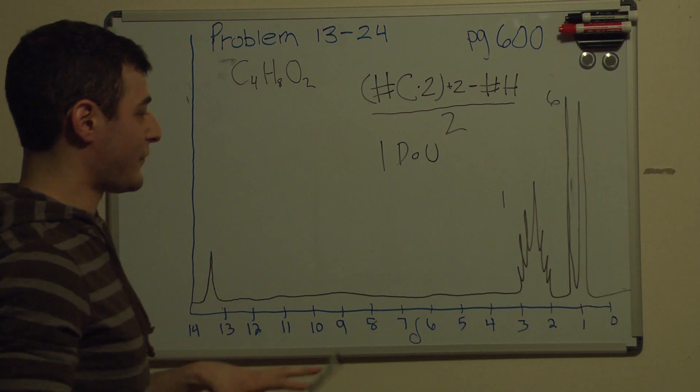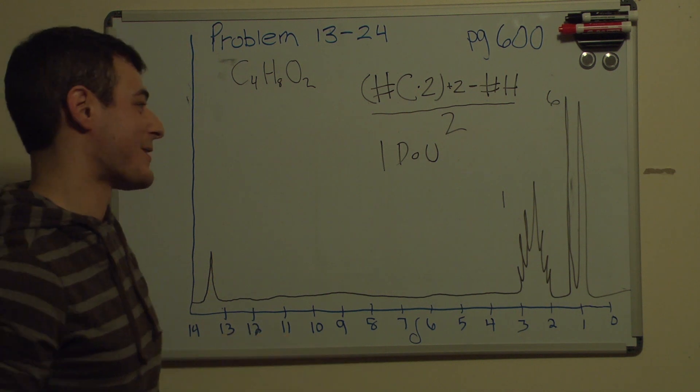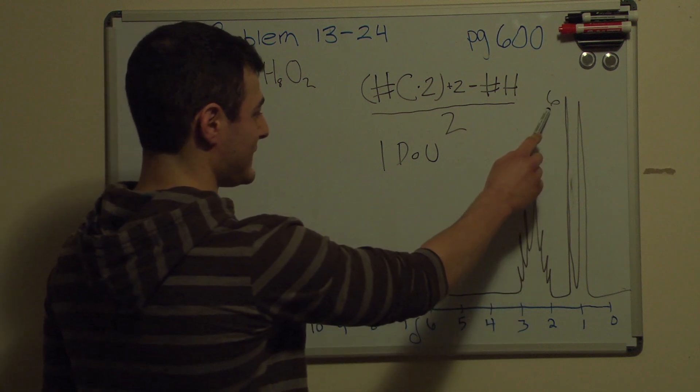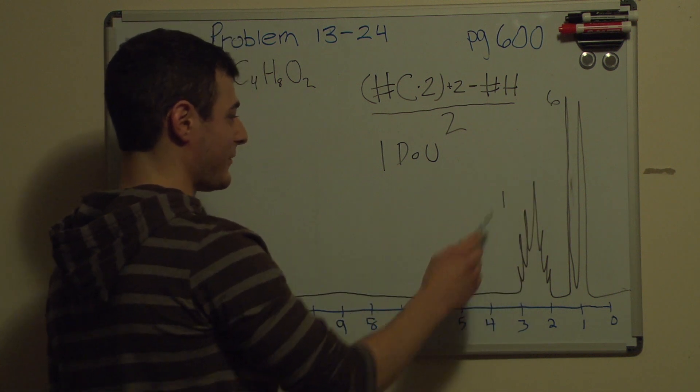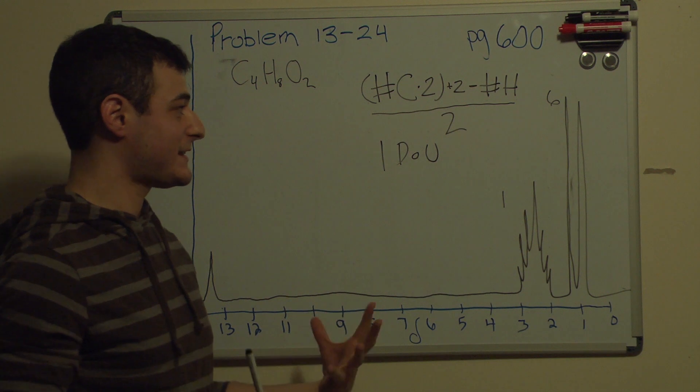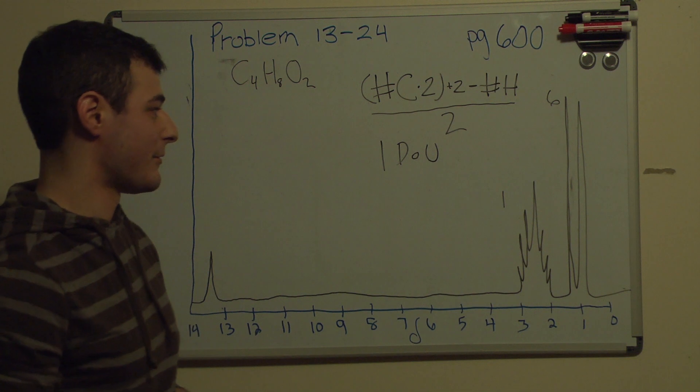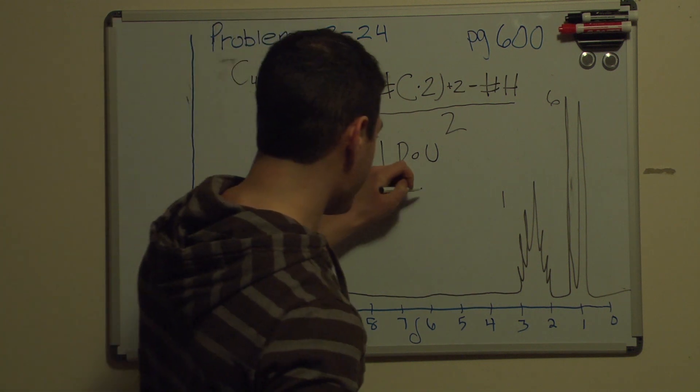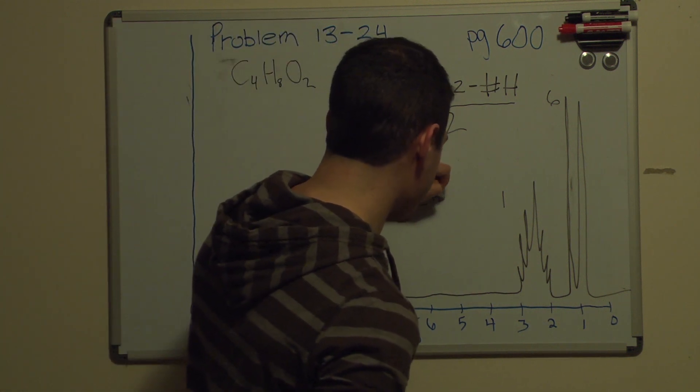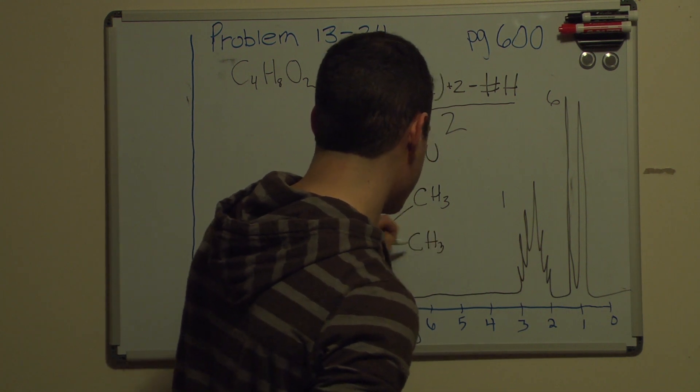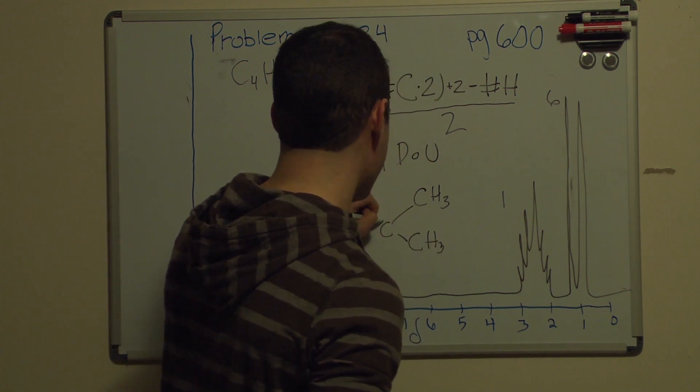Now we're ready to solve this problem. The first thing that jumps out at me when I'm looking at this guy right here is this doublet that integrates to six and this multiplet that integrates to one. You're going to see something like this a lot and it's usually just one thing, and that's an isopropyl group. Now I have that memorized just because you see this pretty often, but I'm going to explain exactly why it is this way.